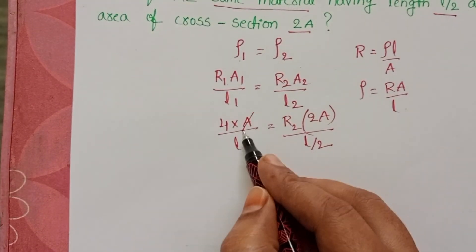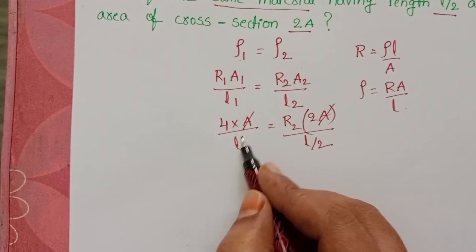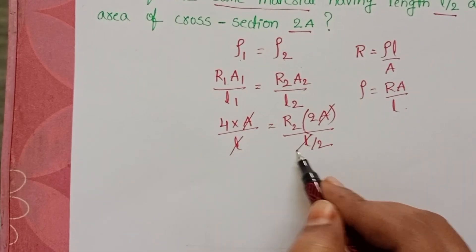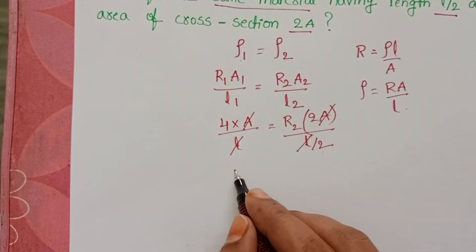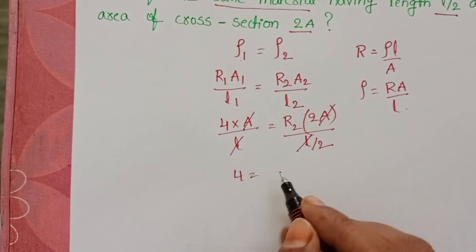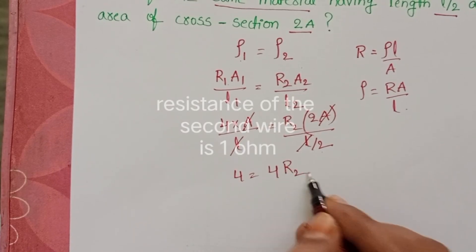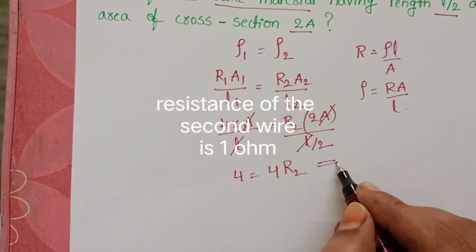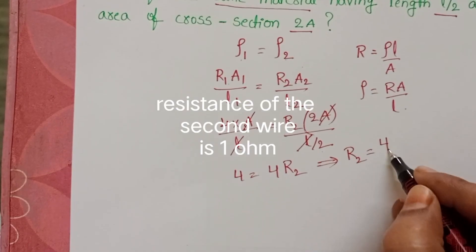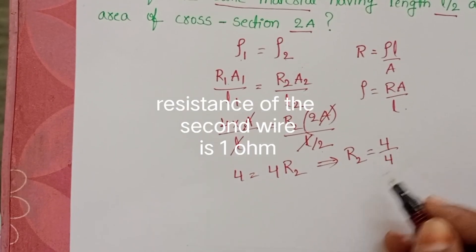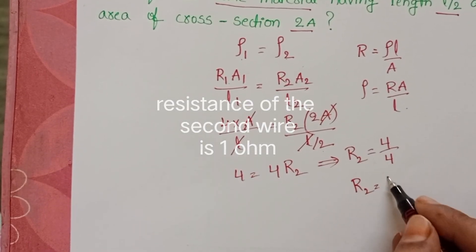On both sides, A gets cancelled and L also gets cancelled. The 2 goes to the numerator, giving 4R₂ equals 4. From this, R₂ equals 4/4, so R₂ equals 1 ohm.